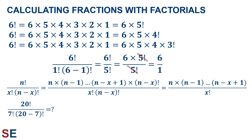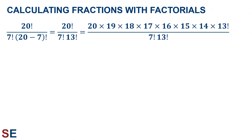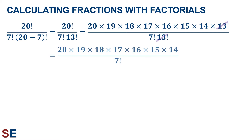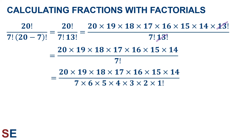Let's look at how a fraction for a large number of trials could simplify — for example, 20 choose 7. That would be 20 factorial divided by 7 factorial times 20 minus 7 factorial, which is 20 factorial divided by 7 factorial times 13 factorial. If we expand out the numerator, we get 20 times 19 times 18 times 17 times 16 times 15 times 14 times 13 factorial. The 13 factorial in numerator and denominator cancel, giving us that product divided by 7 factorial, which we can expand as 7 times 6 times 5 times 4 times 3 times 2 times 1.